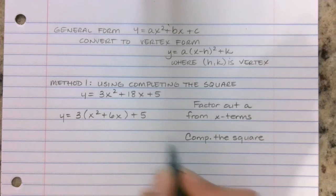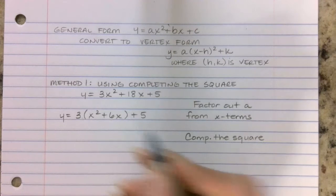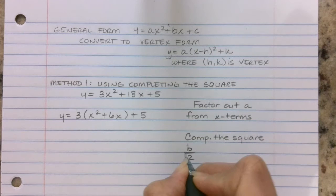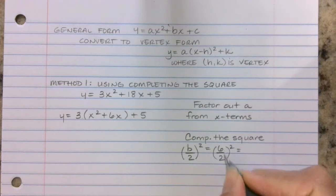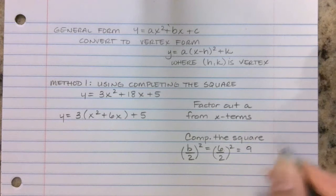The reason we want to make that a perfect square trinomial is because we want to make it really easy to factor. So the formula to get that constant term, that new c term, is to take this b term, in this case we have 6, take the b term and divide it by 2, and then square it. 6 divided by 2 is 3, squared becomes 9.